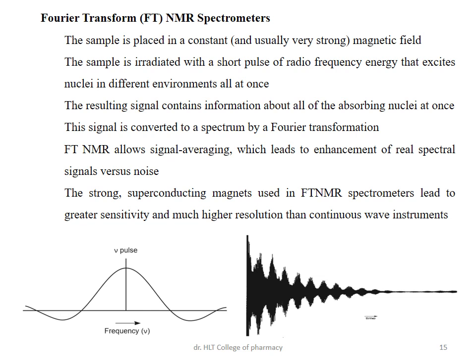The FID pulses shown on the right side can be seen, and a single pulse with frequency can be calculated and transformed — that is the Fourier transform. In FT NMR, the sample is placed in a constant strong magnetic field and irradiated for a short period of 1 to 10 seconds. The resulting signals contain information about the nuclei (protons) and are converted into the spectrum. FT NMR allows signal averaging, which leads to enhancement of the real spectral signal versus noise.